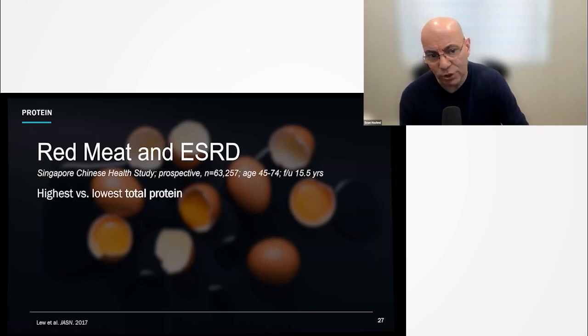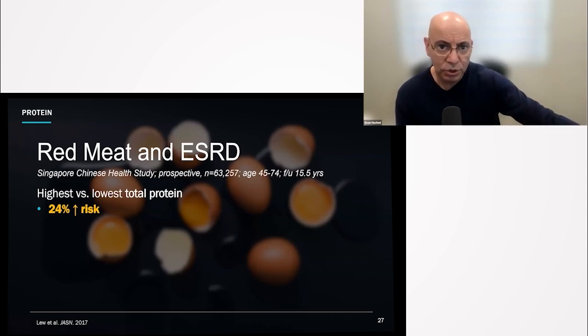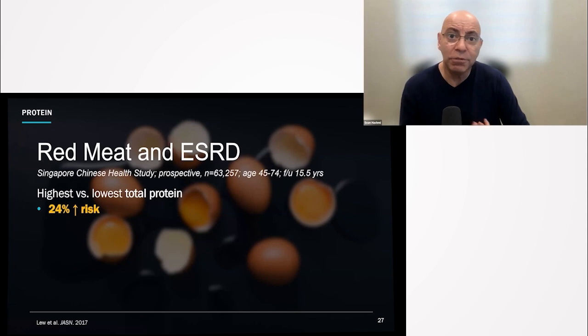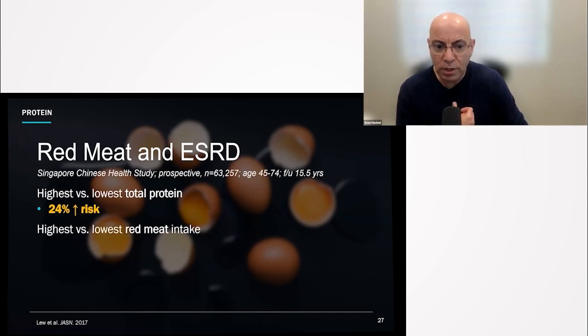Same thing when it comes to end-stage renal disease. The more red meat consumption, the more the risk. Oftentimes you'll see that a lot of patients will be told by their clinics and dieticians you need to eat more protein. It's not uncommon that when I go around in a dialysis unit, I'll see a patient have a fast food meal that they're trying to eat, thinking they're doing themselves good because they have protein, quote unquote, in the form of a Big Mac. And that couldn't be anything further from the truth. So helping patients to make those better decisions makes all the difference.